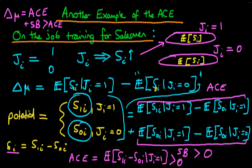Much like before, if we could assume random assignment of on-the-job training, that would remove the selection bias effect. We can see that in the case of random assignment, s0i and s1i are independent of ji. So we can replace the expected value of s0i given ji equals zero with the expected value of s0i given ji equals one, and now the first expression in the second line and the second expression on the bottom line are the same, so the selection bias effect actually disappears. This is in the case of random assignment of ji.